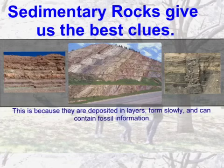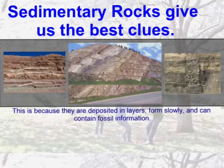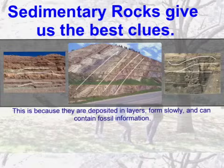Sedimentary rocks give us the best clues. This is because they're deposited in layers, they form very slowly over time, and they can contain fossil information. Here you can see horizontal layers, diagonal layers, and horizontal layers with a little bit of a fold in some of them.